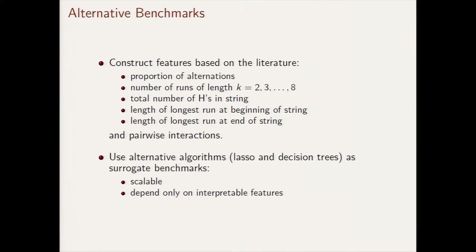We use standard machine learning algorithms — lasso regression and decision trees — to combine these basic features for prediction, and compare their performance against both the existing models and table lookup. Compared to table lookup, these scalable approaches are much more scalable and only use interpretable features. The key result is that scalable machine learning algorithms, built on essentially the same features that the behavioral models use, approximate the prediction performance of table lookup. So the issue is not missing features — it's that the behavioral models aren't combining them as well.